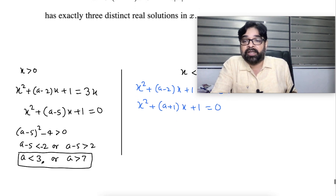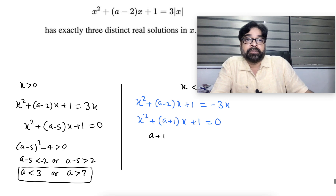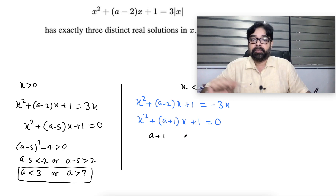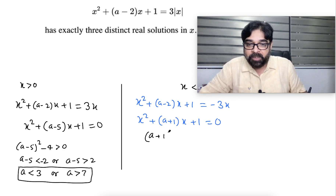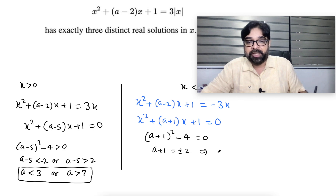And for the second quadratic (x < 0), D must equal zero. So (a plus 1) squared minus 4 equals zero. This gives (a plus 1) equal to plus or minus 2, which means a equals either 1 or a equals minus 2.